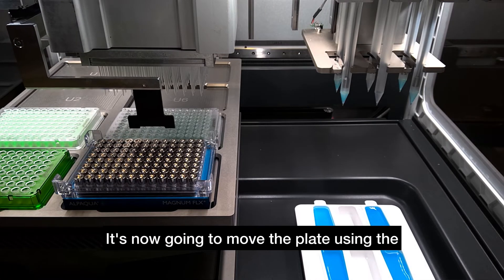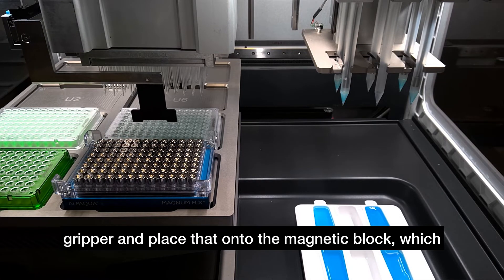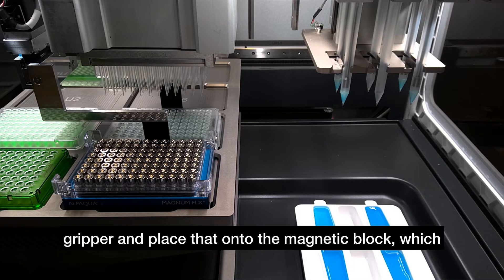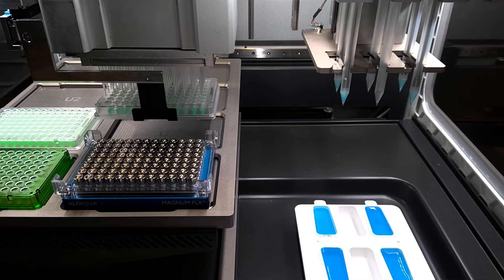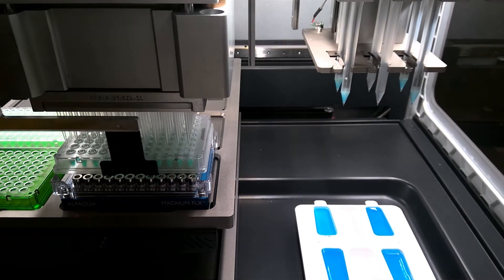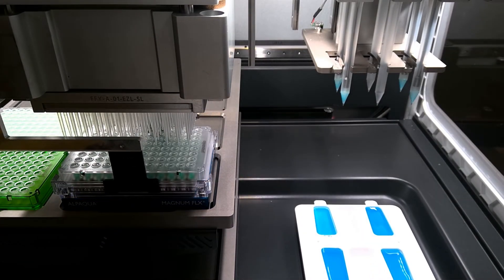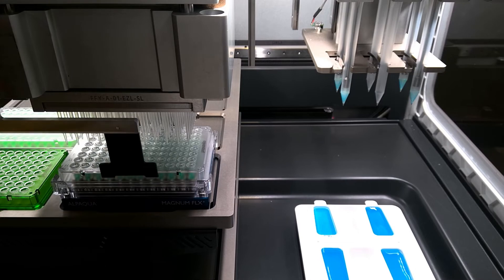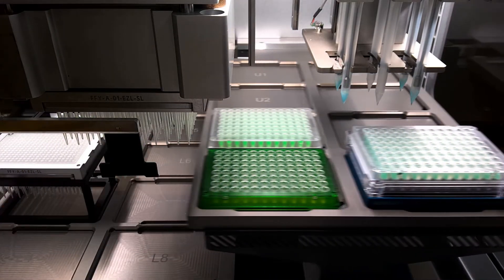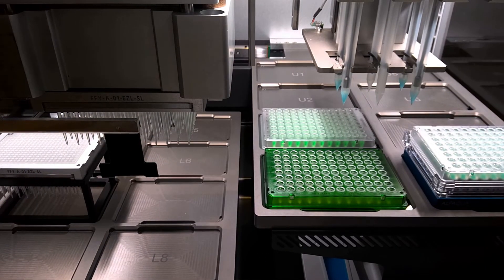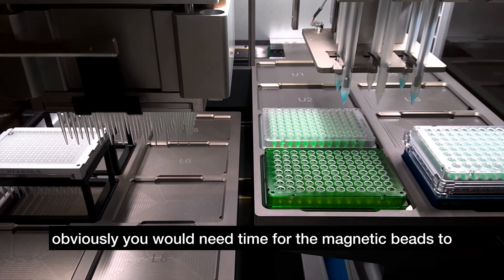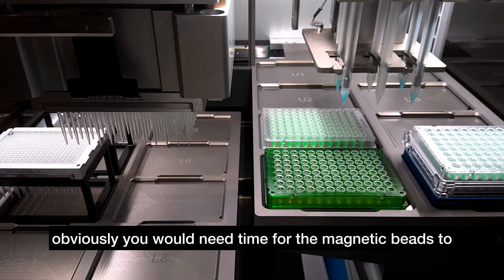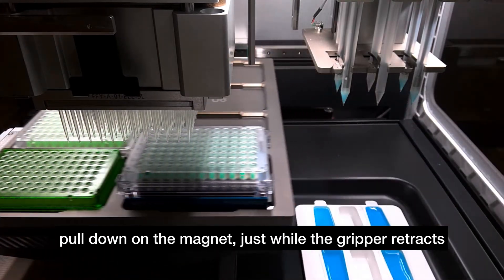It's now going to move the plate using the gripper and place that onto the magnetic block, which in this case is the Alpaca Magnum Flex block. So it's just going to move that across. It's just given a little time here just for the magnetic beads to pull down on the magnet, just while the gripper retracts.